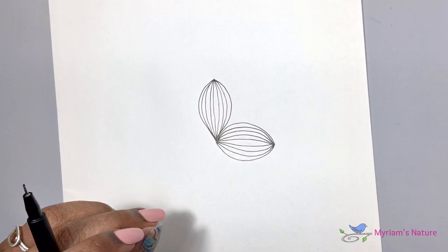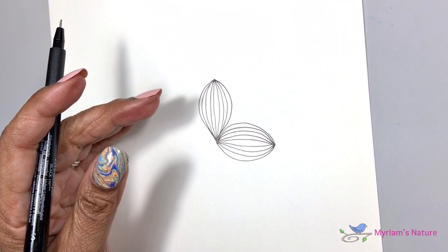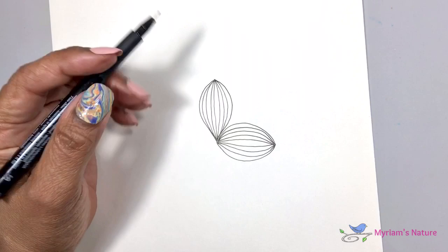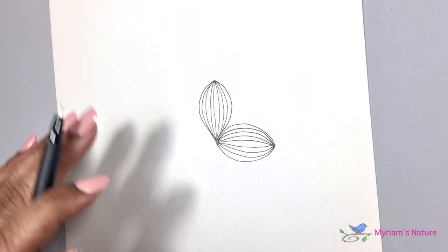Now, the spacing between your lines doesn't need to be perfect. But the further apart your lines are, the lighter your petal will appear in color. And then the closer your lines are, the darker it'll appear. So I'll show you what I mean when I do the next one.